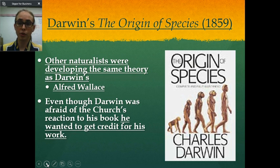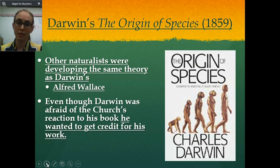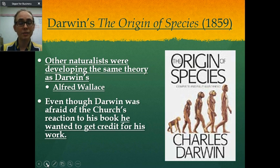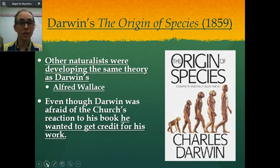Darwin wrote the book The Origin of Species and published it in 1859. He had it written for a long time before that — he was doing his voyage around the globe in the 1830s. He sat on it because he was scared. He was scared of the church's reactions and knew there would be a lot of controversy surrounding his ideas and findings.